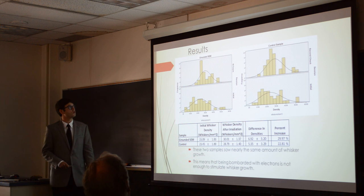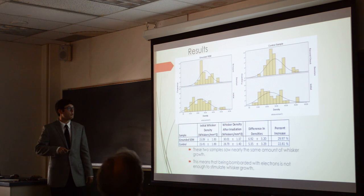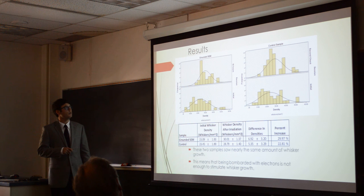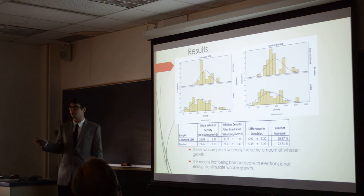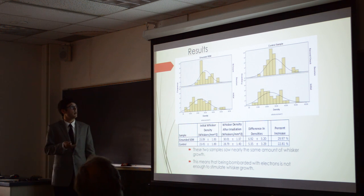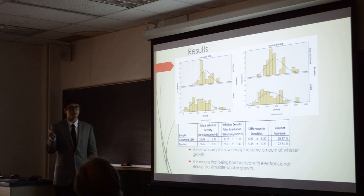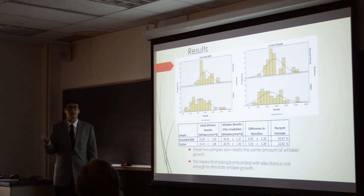Here are the results for the control sample and the grounded scanning electron microscope samples. The axes show whisker density in whiskers per millimeter squared and frequency. The peak did shift for both the control and the grounded sample. We expected the control to grow some whiskers because whiskers grow naturally all the time. It was interesting to see that the grounded sample grew almost the same amount as the control, which tells us that simply bombarding the sample with electrons isn't enough to cause excess whiskers to grow — you need to actually keep the charge on the sample, because without it there's no electric field.